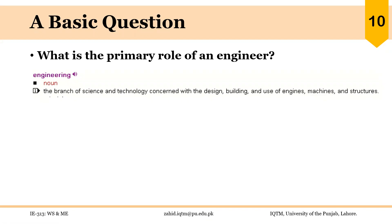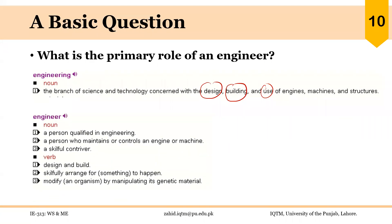Let's first discuss the dictionary definition of engineering. The definition is: the branch of science and technology concerned with the design, building and use of engines, machines and structures. The word engineer as a noun means a person qualified in engineering, and as a verb means to design and build.